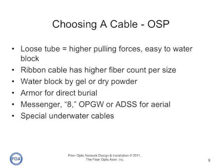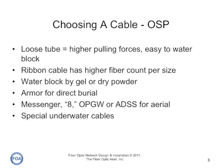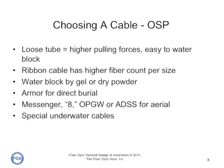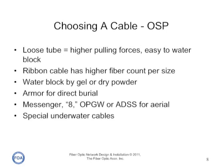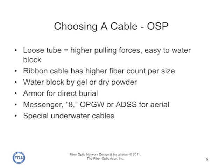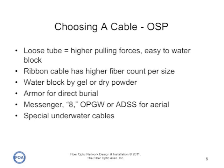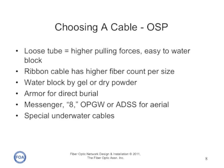Each type of outside plant cable has its own characteristics. Loose tube cable gives us the ability to withstand higher pulling tension and it's easy to water block. Ribbon cable has a higher fiber count per diameter of the cable. Water blocking is now done more by dry powder than by gel. And always, we armor cables for direct burial to prevent crushing loads from harming the fibers and rodents from chewing through the cable.